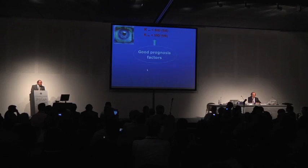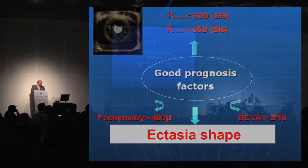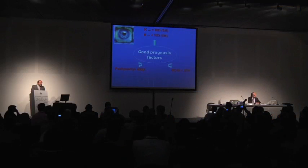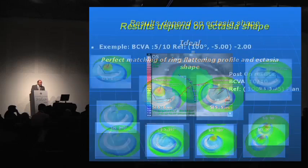Everybody knows that good prognosis factors are keratometry, pachymetry, and best corrected visual acuity. But I believe today there is another very important prognosis factor, which is ectasia shape. We know that results depend on ectasia shape, and the ideal is to have a perfect matching between the flattening profile of the ring and the ectasia shape.